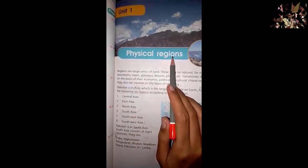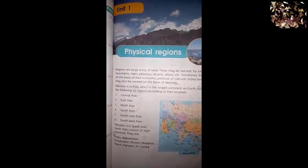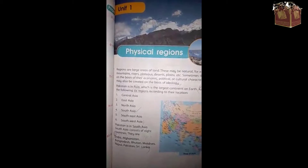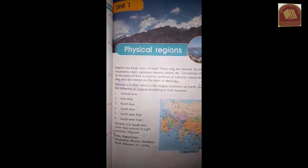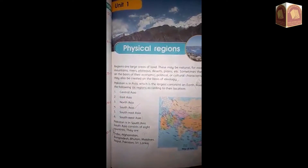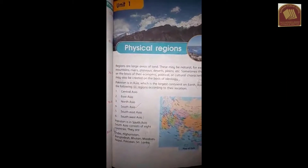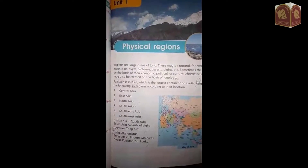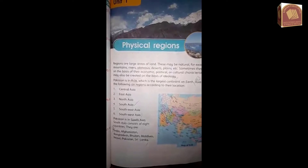Physical Regions kya hain bachon? Zameen ke bahut bade-bade hisse jaise ke pahar, darya, sahra, sabon, wagera — yeh sab zameen ke Physical Regions hain. Jaise ke hum insanon ke Physical Features kya hain? Humari aankhen, humara naak, kaan — yeh sab hamare Physical Features hain. Isi tarah zameen ke bhi Physical Regions hain: yeh pahar, yeh darya, sabon, sahra — yeh sab uske Regions hain.